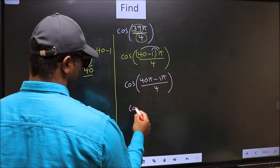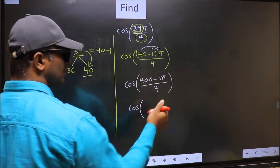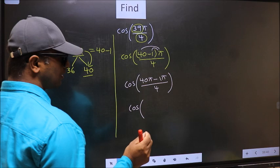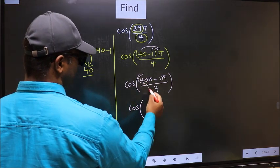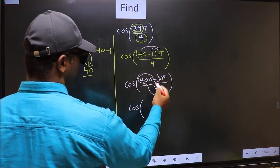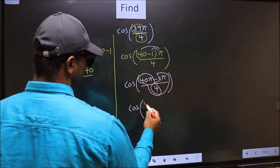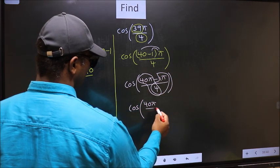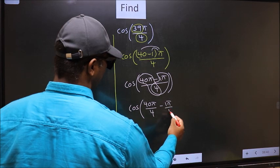Now cos. In this, you should split the denominator in this way: that is 40 pi by 4 minus 1 pi by 4.